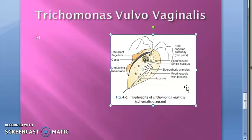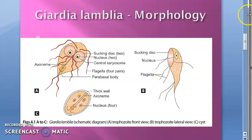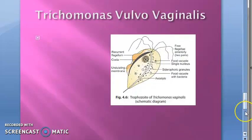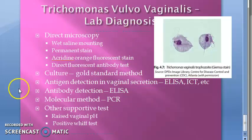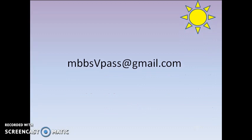The next thing we will learn in this chapter is Trichomonas vulvovaginalis, caused by Trichomonas vaginalis. This is the disease itself — let us identify the causative protozoa.